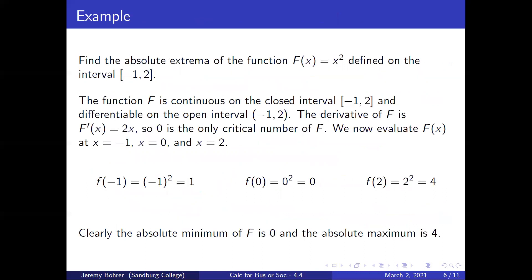For example, find the absolute extrema of f(x) = x² defined on the interval [-1, 2]. The function f is continuous on the closed interval [-1, 2] and differentiable on the open interval (-1, 2). The derivative is f′(x) = 2x, so zero is the only critical number of f. We evaluate f at x = -1, x = 0, and x = 2: f(-1) = 1, f(0) = 0, and f(2) = 4. Clearly, the absolute minimum of f is 0 and the absolute maximum is 4.